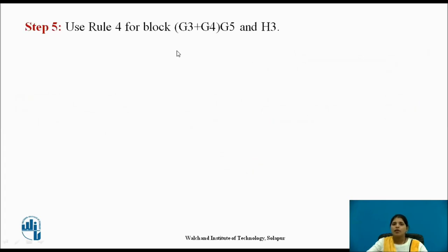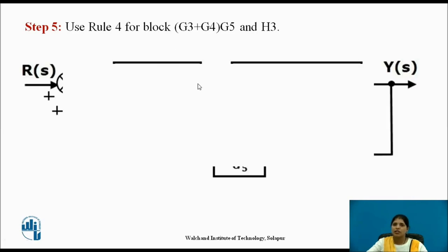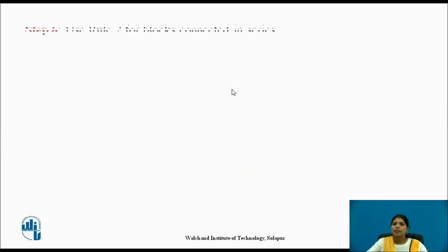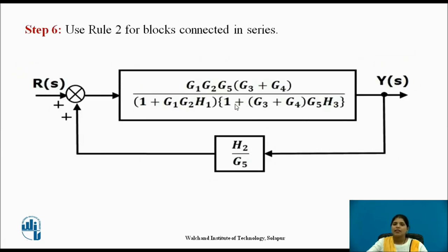Use rule 4 for block (G3 plus G4)·G5 and H3. After simplification we get the output. These two blocks are connected in series, so using rule 2 they get multiplied directly and we get the next output. H2 upon G5 block is in feedback with this block, so again eliminate this feedback loop with the help of rule 4.